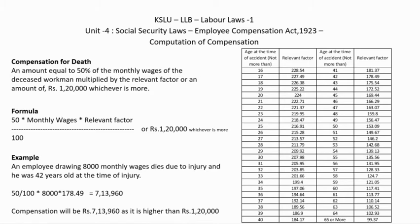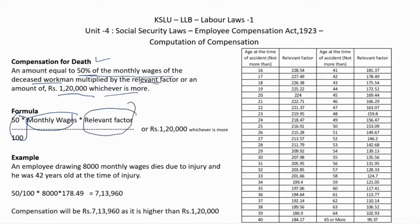In case of death, the formula is: 50% of the monthly wages of the deceased employee multiplied by the relevant factor. The formula is: (50/100) × monthly wages × relevant factor. If the resulting amount is less than ₹1,20,000 then compensation will be ₹1,20,000; if it is more, then compensation will be the calculated amount.